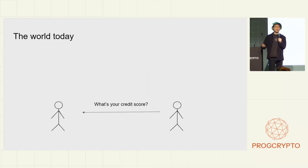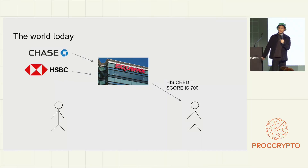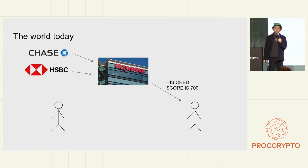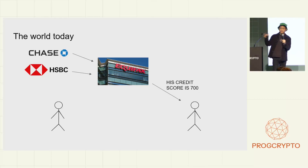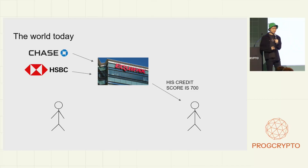We can take a more complicated example. The person on the right asks, 'What's your credit score?' I might go to Equifax and say, 'You tell him, Daddy Equifax.' Equifax will go out and gather a bunch of my data from various data silos and platforms, crunch it together, and return to the requester: 'His credit score is 700.' I'll stamp that with the Equifax stamp of approval. The person on the right might be a financial service provider, someone I'm applying to for a loan or mortgage.